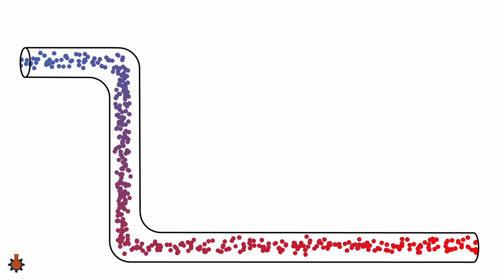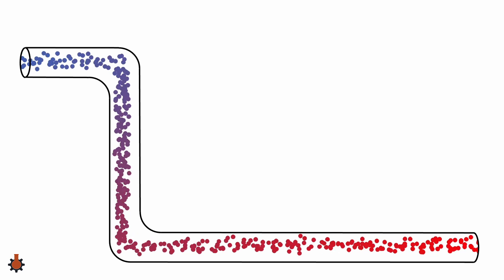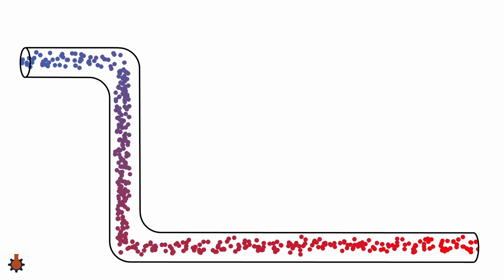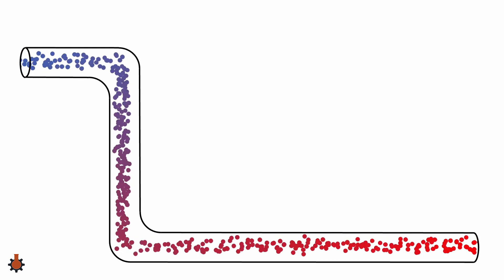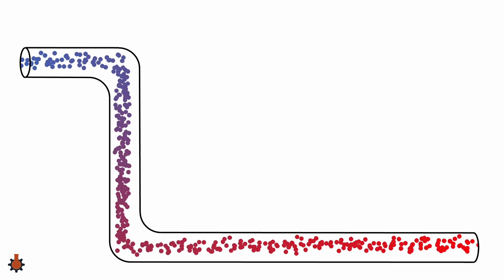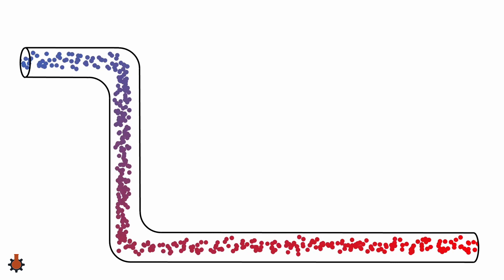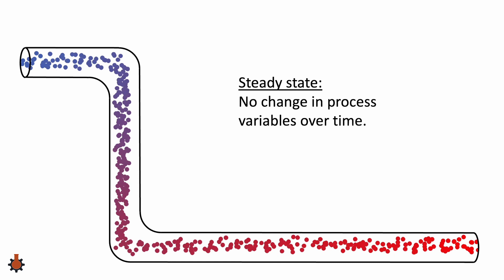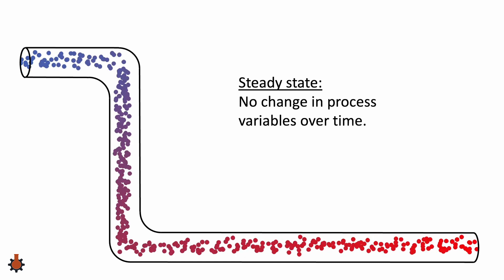It might be tempting to say that the inlet does not equal the outlet and therefore there is a change, and this is not at steady state. This would be incorrect. We need to go back to the formal definition of steady state where process variables do not change with time and expand this definition.